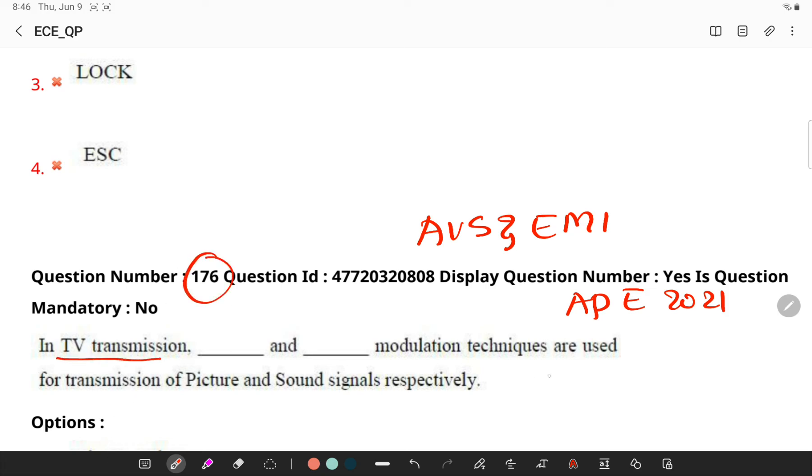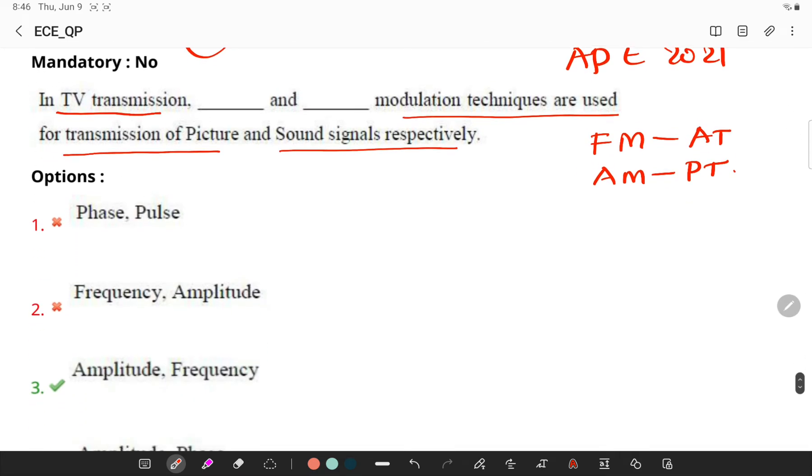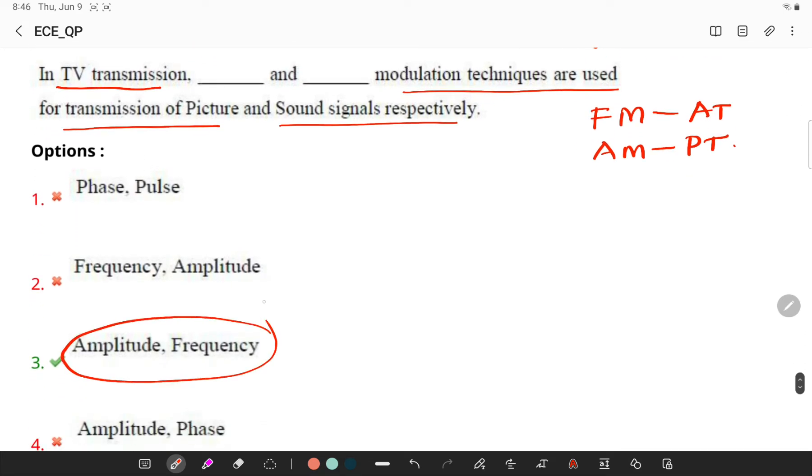In TV transmission, which modulation techniques are used for transmission of picture and sound signals? Remember, during TV transmission, frequency modulation is used for audio transmission and amplitude modulation is used for picture transmission. This is a standard question which is being repeated many times, so try to remember this.